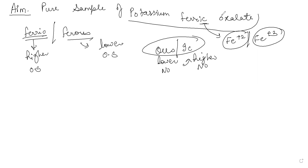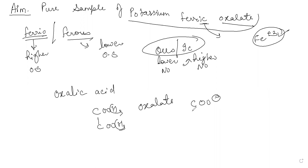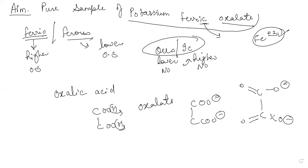So we are talking about Fe³⁺ here. Now, oxalate — you all know that oxalic acid is COOH-COOH. If I'm talking about oxalate, just remove the H from both ends, and whatever is left — COO⁻ and COO⁻ — this is the oxalate ion.